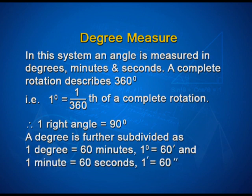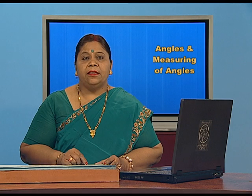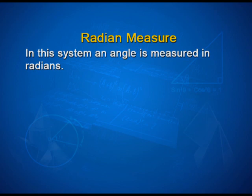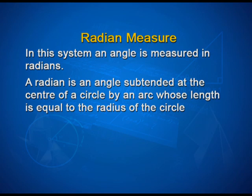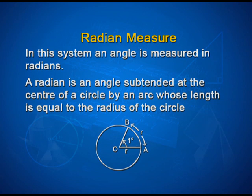The second system is radian measure. In this system, an angle is measured in radians. A radian is an angle subtended at the center of a circle by an arc whose length is equal to the radius of the circle. In the figure, let AB be an arc of a circle with center O and radius R, such that the length of arc AB is equal to R. Then angle AOB will be 1 radian.